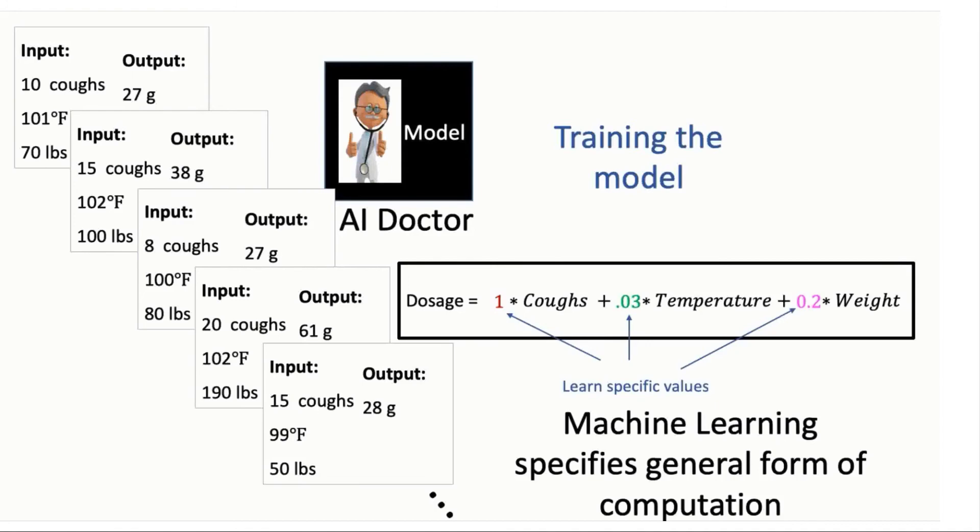Models need to not just produce accurate outputs for training data that they've already seen, but also need to be able to extrapolate from the training examples to produce appropriate outputs for new inputs that they've never seen before.